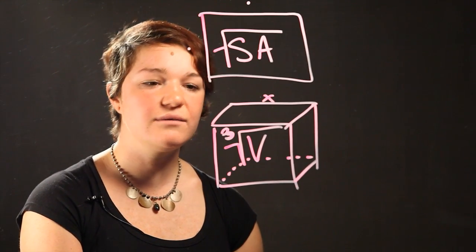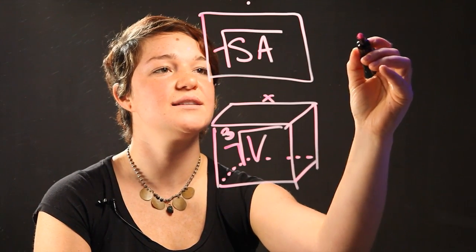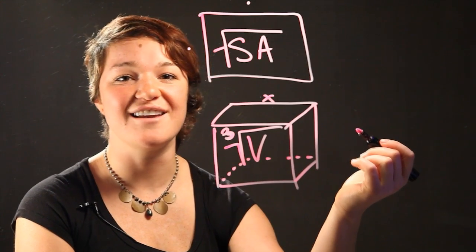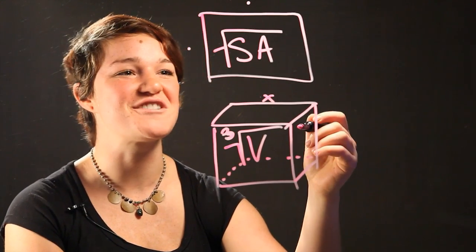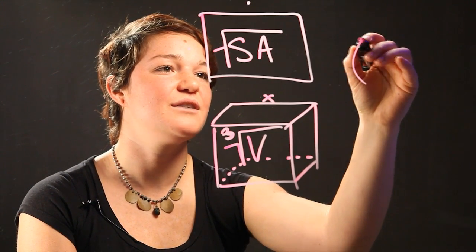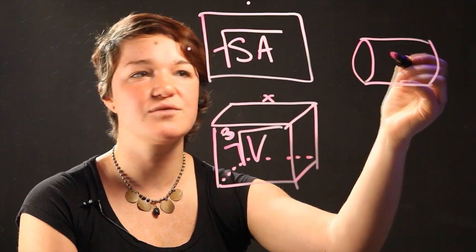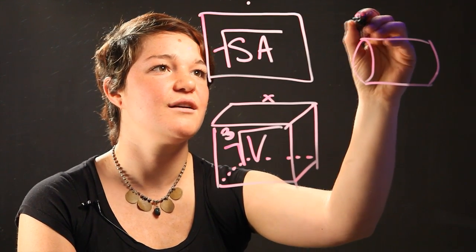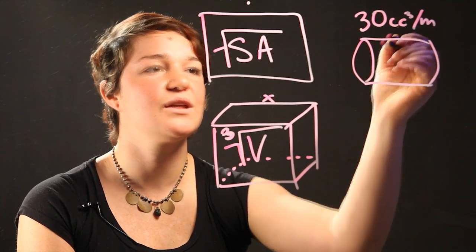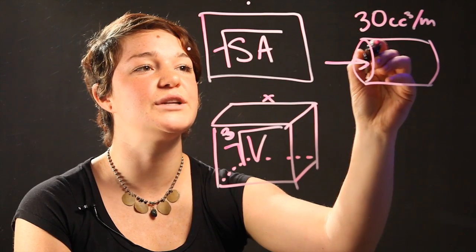Now if we want to get even more complicated, let's say that you're a physics instructor or somebody that works on rockets or flow rates. So you have a flow rate through a pipe at a certain rate. Let's say it's 30 cubic centimeters per minute, and that's the flow rate of fluid going through this pipe.